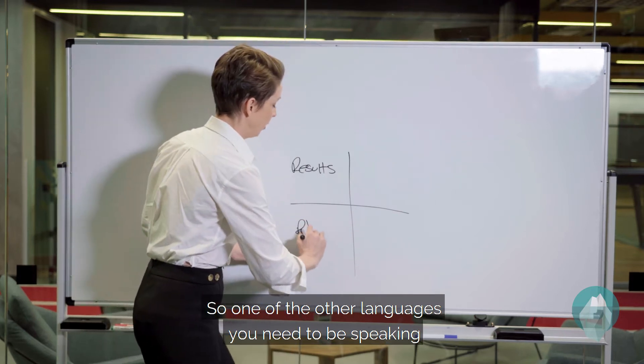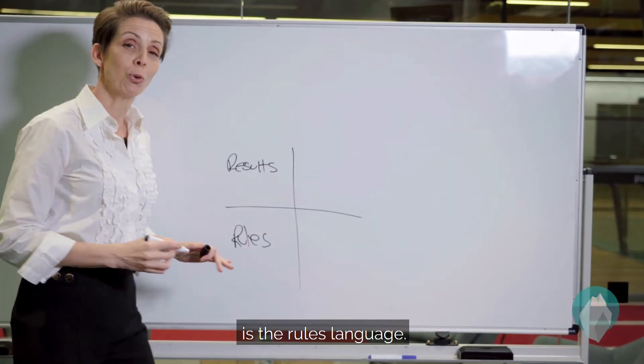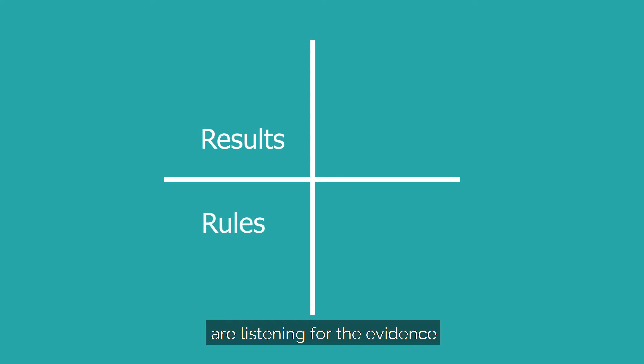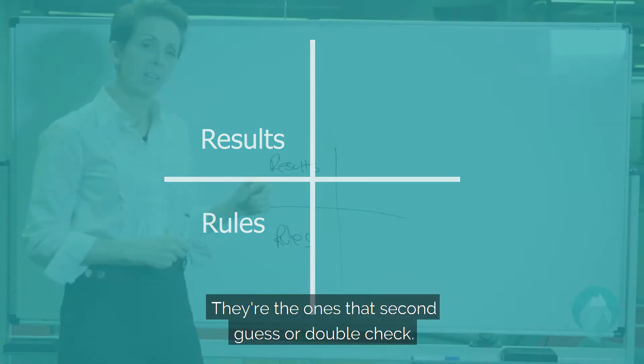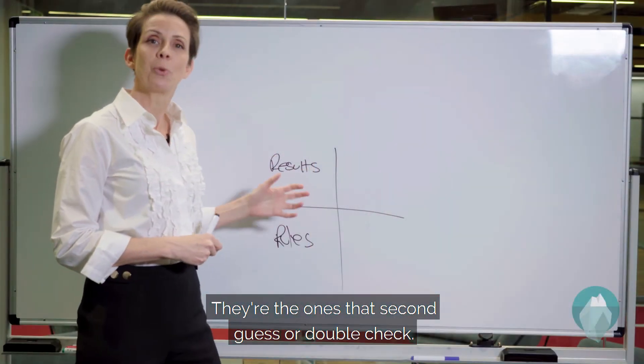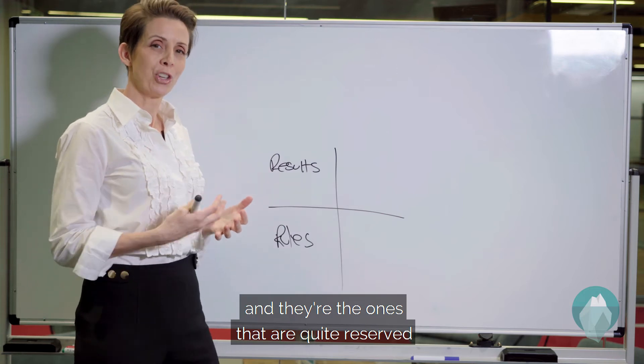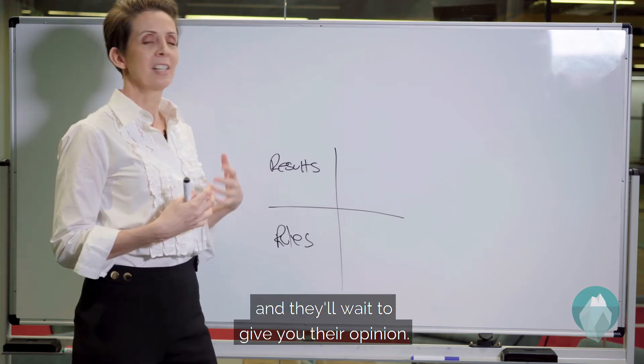One of the other languages you need to be speaking is the rules language. These people who speak this language are listening for the evidence and the proof that whatever you're saying is going to work. They're the ones that second-guess or double-check. They come early to meetings and they're quite reserved, and then they'll wait to give you their opinion.